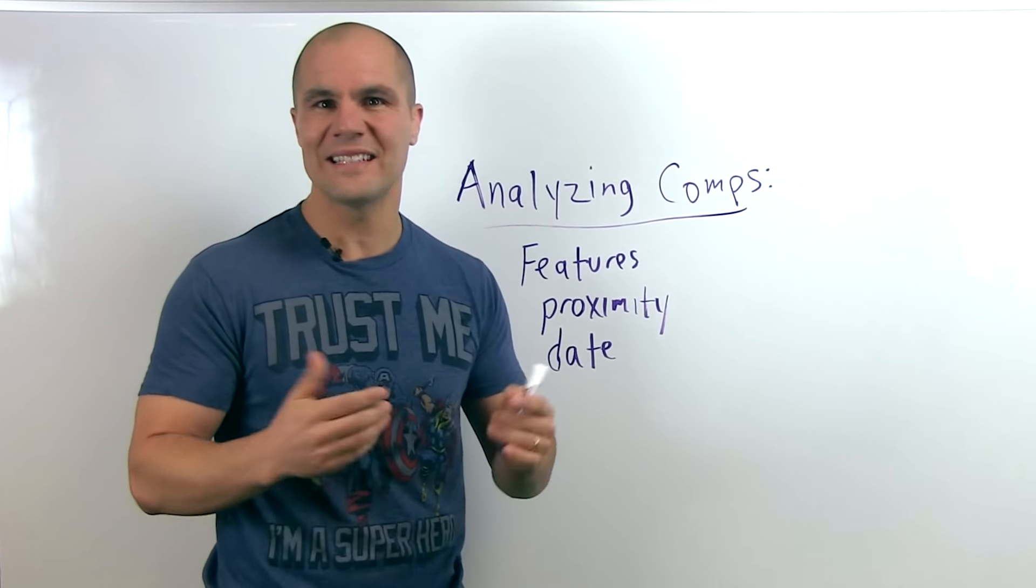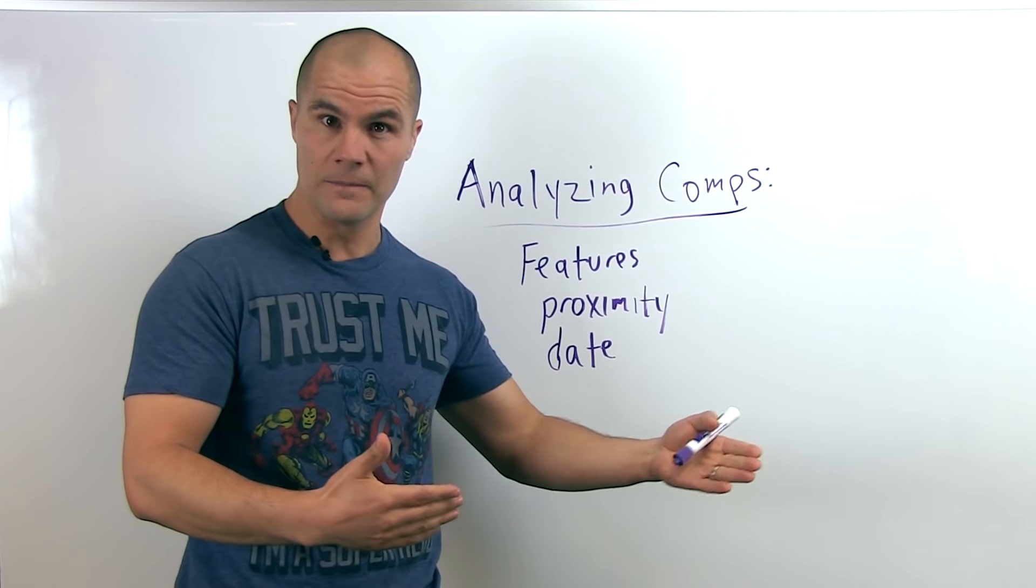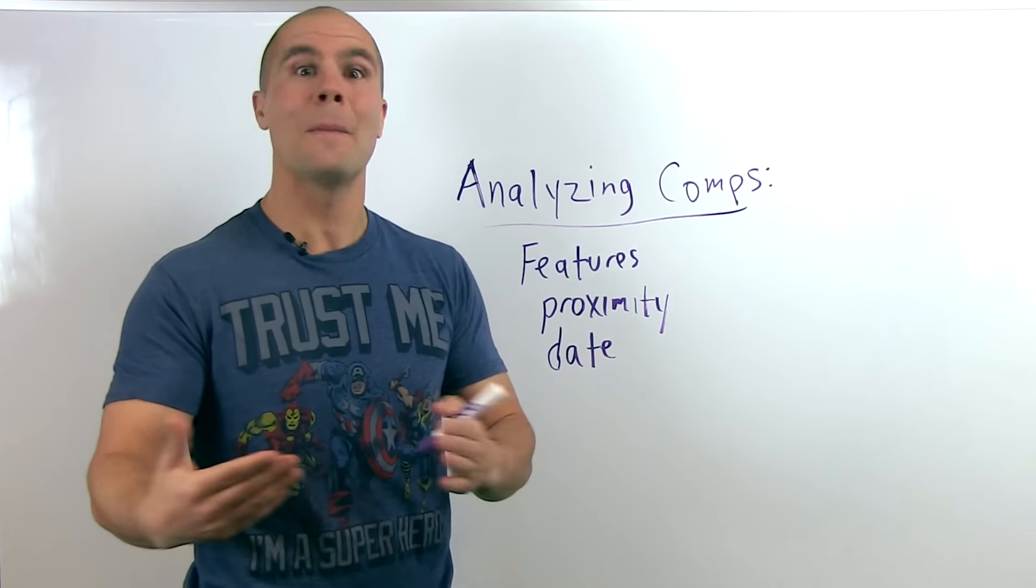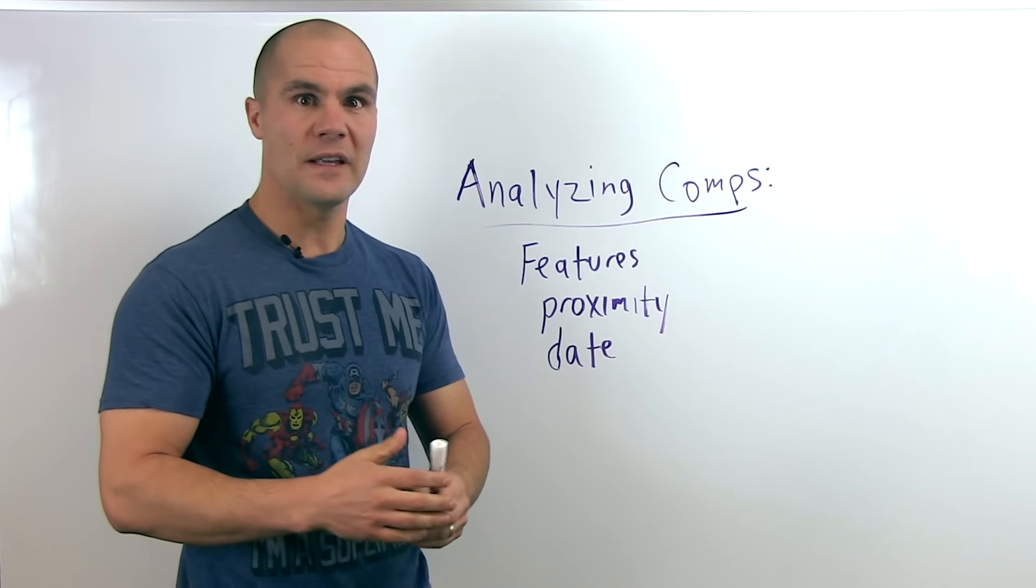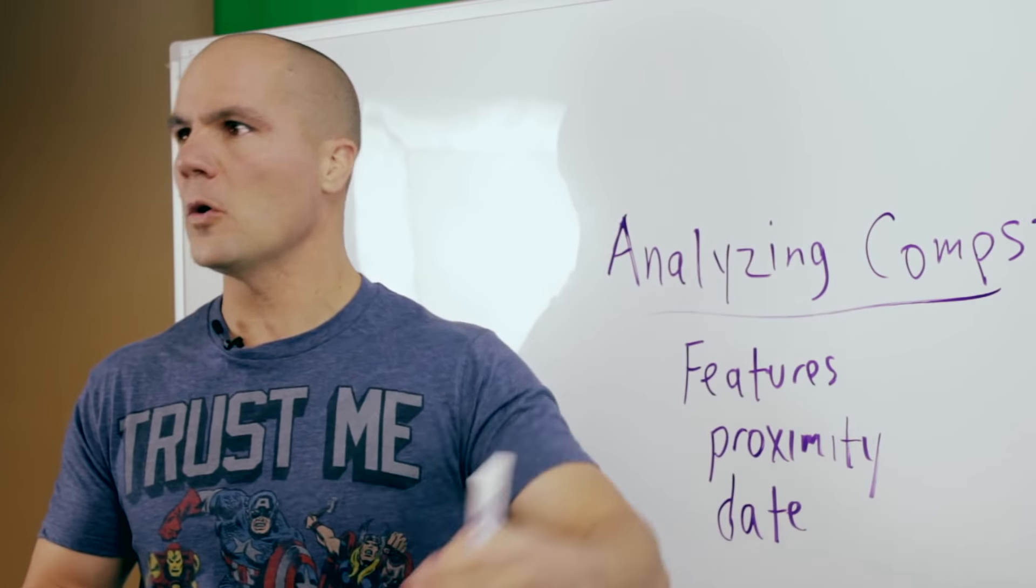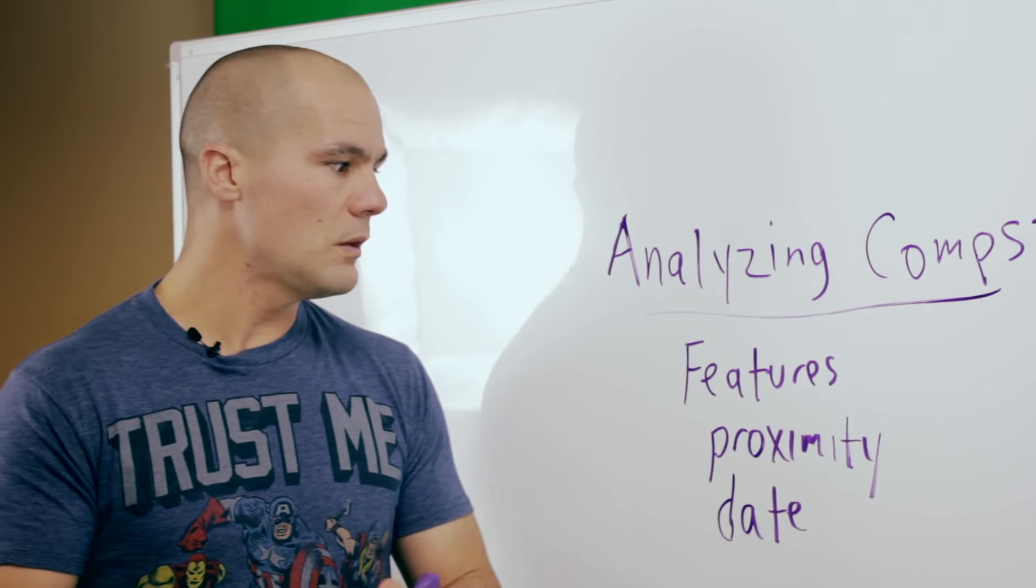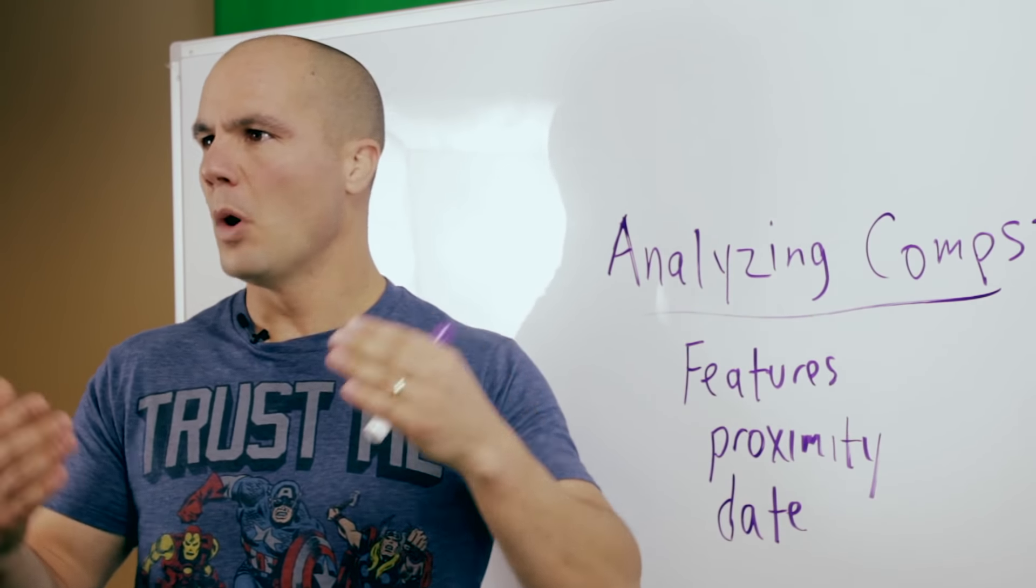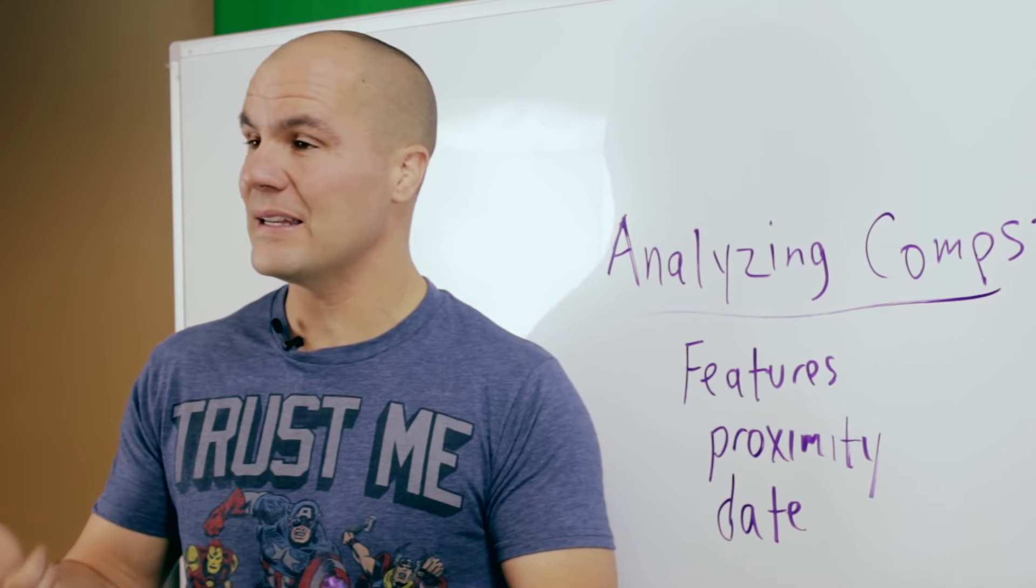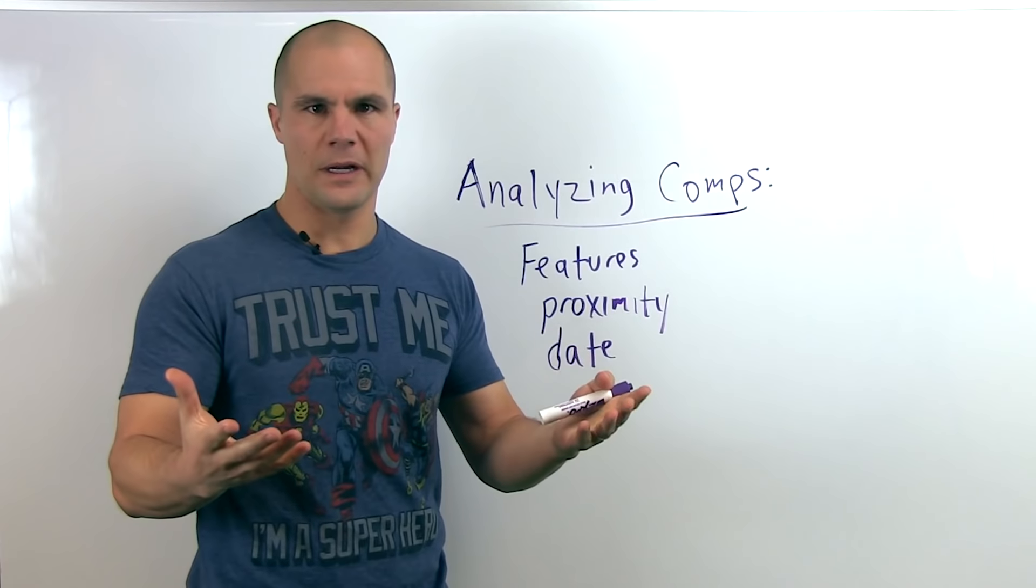And the third one is the date, meaning the date it closed. So the more recent it closed, the more relevant, the better the comp. So if it sold yesterday, that is the best comp instead of 12 months ago, nine months ago. So what we look for is we look for what's most relevant to the subject property within these three things: features, proximity, and date, and we go from there.